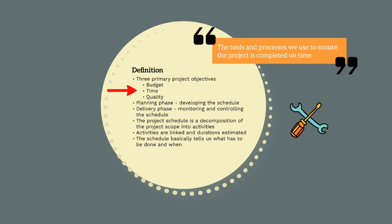Project schedule management consists of the tools and processes we use to ensure the project is completed on time. The planning phase covers the identification of all the work to be done, sequencing all the works, estimating durations, and collating all this information into a project schedule.